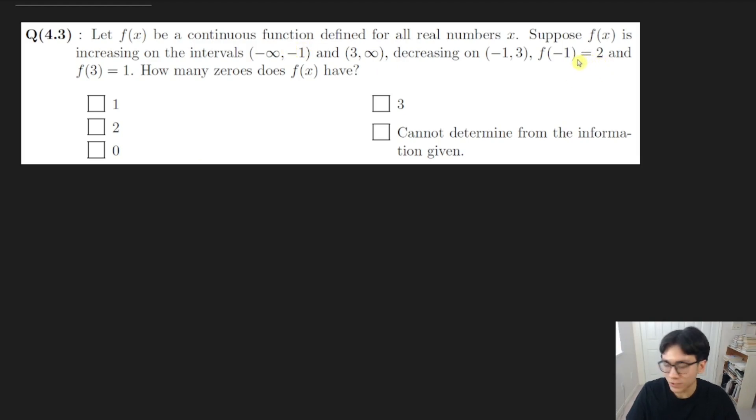The first thing that gives us the most information is that these two points, f of negative 1 is 2 and f of 3 is 1. f of negative 1 is 2 means that the point negative 1, 2 is on the graph. That means that when x is negative 1, y is 2, so this point on the graph.